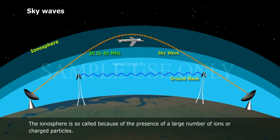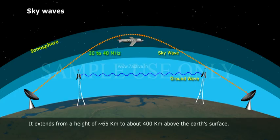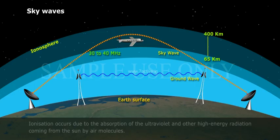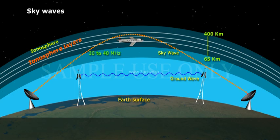The ionosphere is so-called because of the presence of a large number of ions or charged particles. It extends from a height of about 65 kilometers to about 400 kilometers above the Earth's surface. Ionization occurs due to the absorption of the ultraviolet and other high-energy radiation coming from the Sun by air molecules. The ionosphere is further subdivided into several layers.